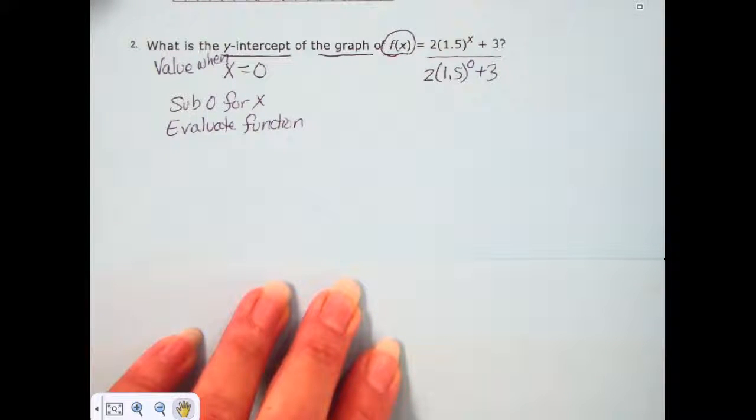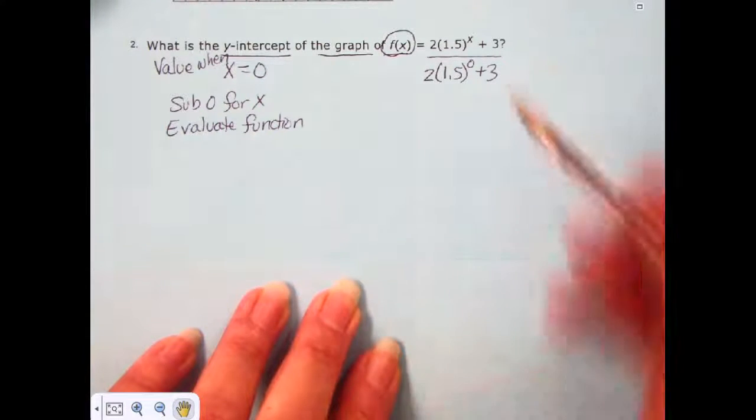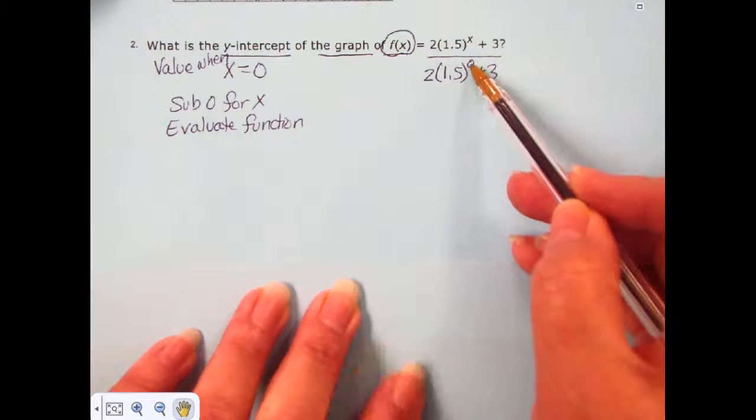Our first step in evaluating this is to evaluate the exponent, to evaluate the exponential part of this expression, and we have 1.5 to the zero power.